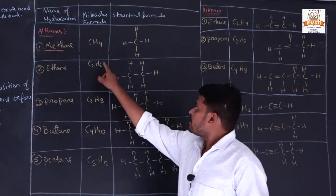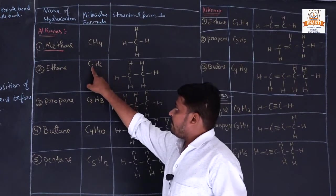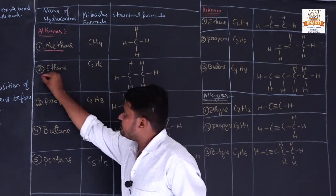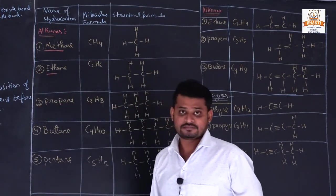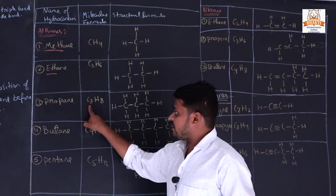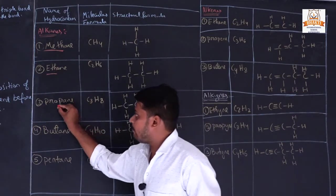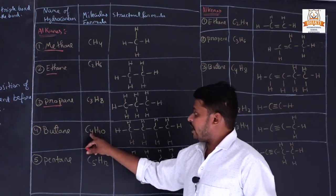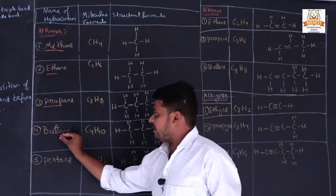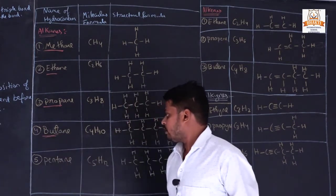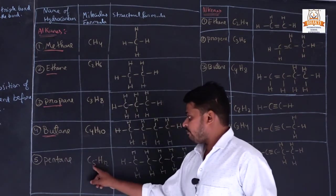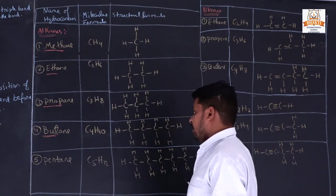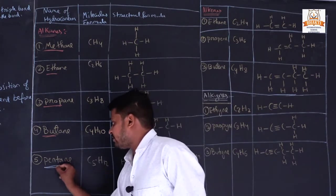If the number of carbon atoms is 2, it is called 'eth-'. If the number of carbon atoms is 3, it is called 'prop-'. If the number of carbon atoms is 4 it is called 'but-', and if the number of carbon atoms is 5 it is called 'pent-'.